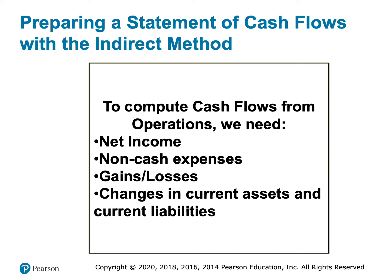To use the indirect method, we're going to start with net income. The first thing that we do is add back any non-cash expenses — expenses that we recorded but didn't actually write a check for; we never paid cash for them. The biggest and most common non-cash expense is depreciation. We debit depreciation expense for a large amount every year, but we don't actually write a check to anybody for it. So we're going to take net income and add back the depreciation expense.